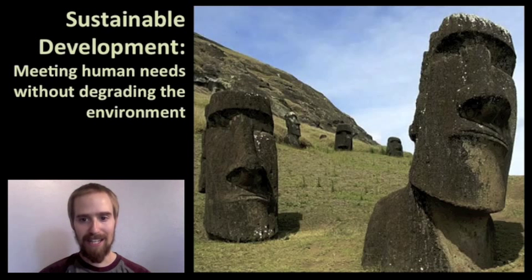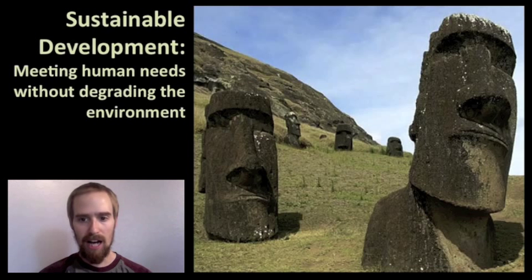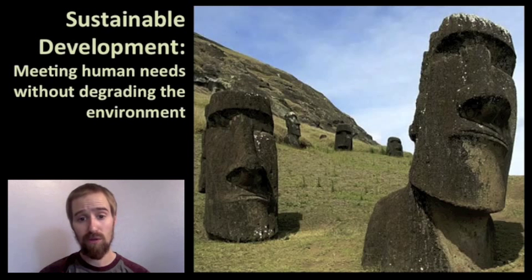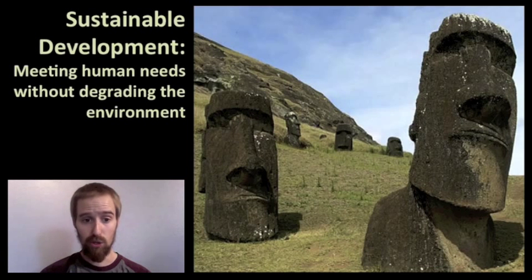Biodiversity is to an environment as rivets or bolts are to an airplane. The more bolts you lose, the less likely your airplane is to stay in the sky, and if you lose enough bolts, the airplane starts to come apart and crashes back down to Earth. In an ecosystem, the diversity of life present in that system strengthens the system overall. Individual organisms die all the time, but when whole groups of organisms start to be lost, the ecosystem begins to slowly lose integrity. If you lose enough biodiversity and those niches go unfilled, the ecosystem may lose its ability to support living organisms over time.